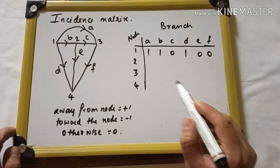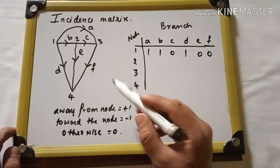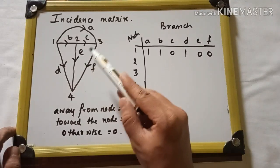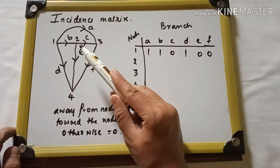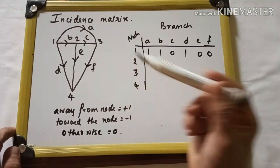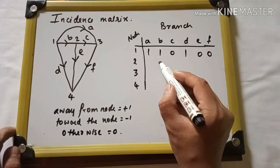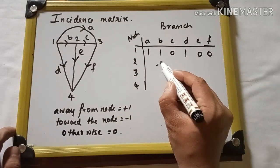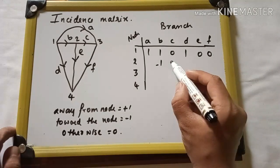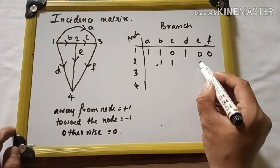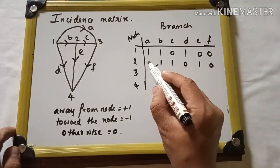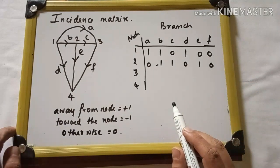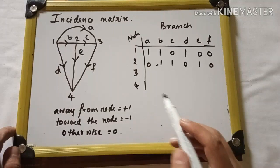For the second node, branches b, e, and c are connected. Branch b is coming towards the node so we write minus 1. Branches c and e are going away from the node so we write plus 1. Branches d, f, and a are not present in node 2, so we write 0.